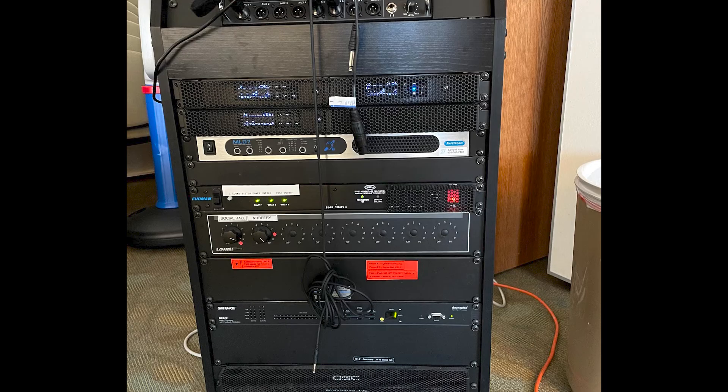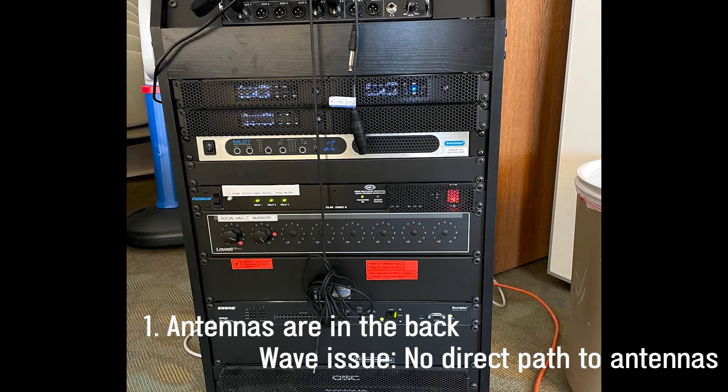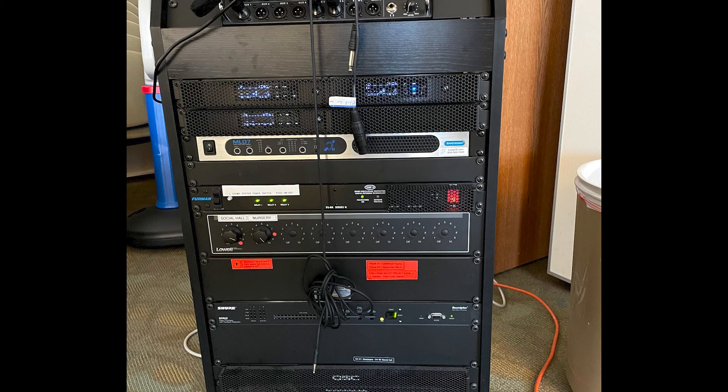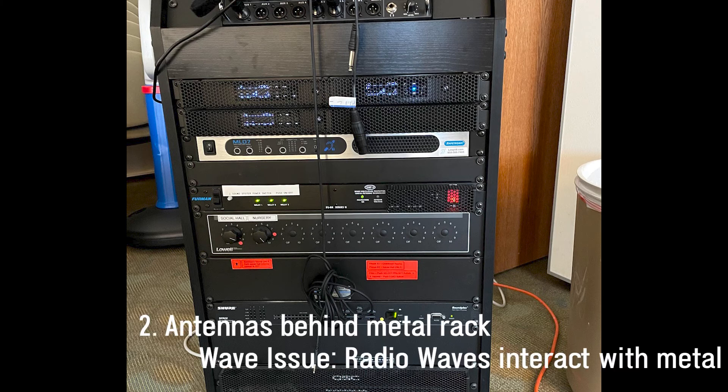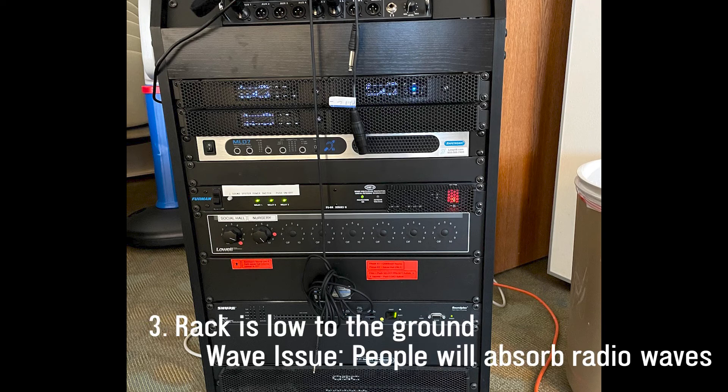So, let's take everything we've discussed and put it to practice. Here's a setup that I worked on not too long ago. There are three wireless receivers about 50 feet away from the stage. Problem one is that the antennas are in the back of the rack, so there is no sightline from the transmitter antennas to the receiver antennas. Similarly, the waves have to go through or around this metal rack, which can cause unwanted interactions with the waves. This rack is also low to the ground, which means that the waves have to travel through all of the people that are standing in the space.